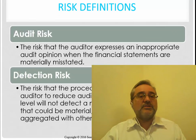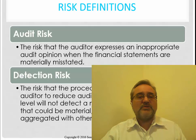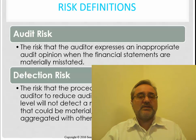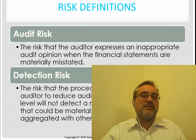So in this video, we've identified materiality and the audit risk model that determines the risk of material misstatement. Based upon that risk of material misstatement, we determine the nature, timing, and extent of our audit procedures — and these are the audit procedures we use to measure monetary misstatement. In our next video, we'll talk specifically about what some of these tests are that we're going to do in each of these areas.